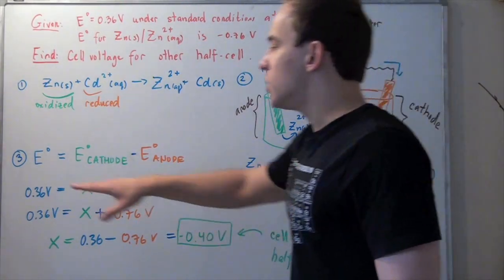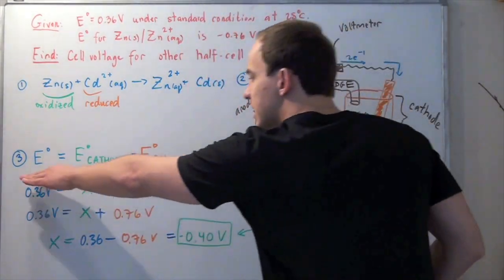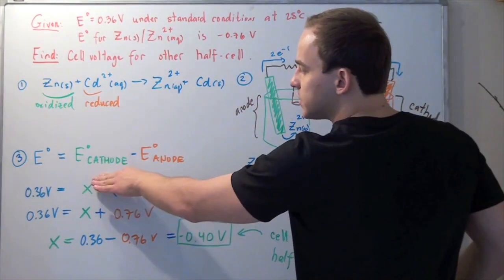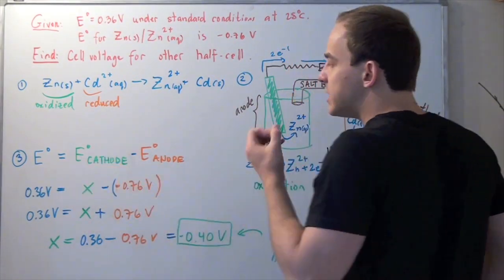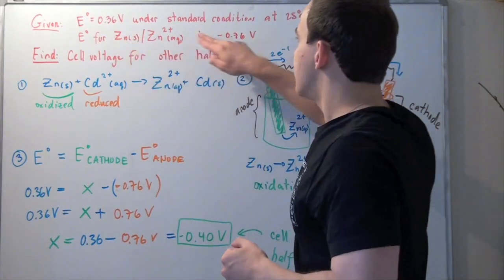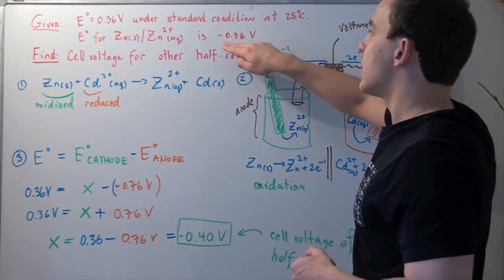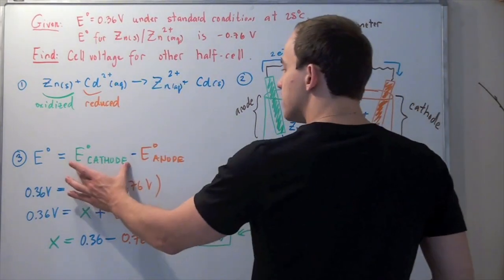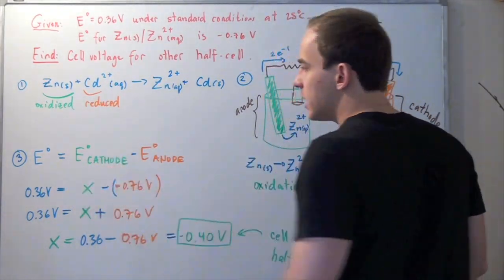In the third step, we use the cell voltage formula to find our cell voltage for the cathode. Now we know that the value of negative 0.76 volts represents the value for the anode. We use this formula to solve for our cathode.